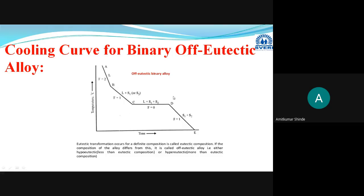For each region of the off-eutectic cooling curve, apply the Gibbs phase rule. In region AB: F equals two — bivariant system, you can vary both temperature and composition. In region BC: F equals one — univariant system, you can vary either temperature or composition without changing the phase. In region CD: F equals zero — invariant system, you cannot vary temperature or composition. In the final region DE: F equals one. In this way we have completed the four different types of cooling curves.